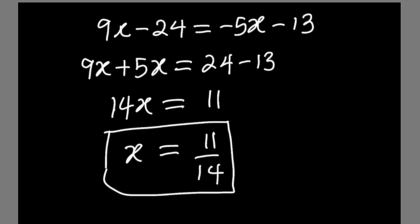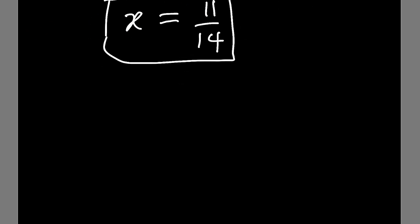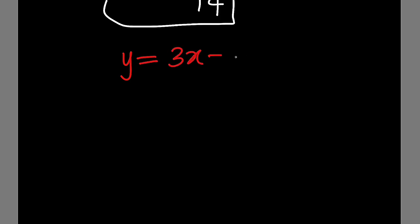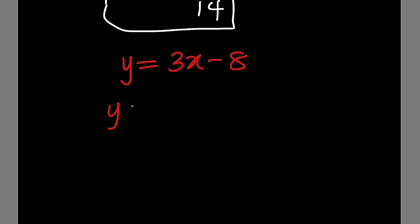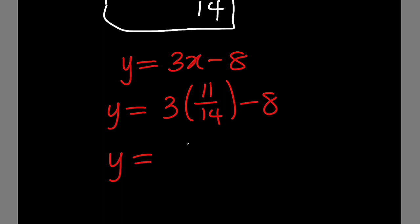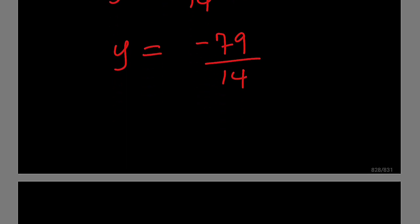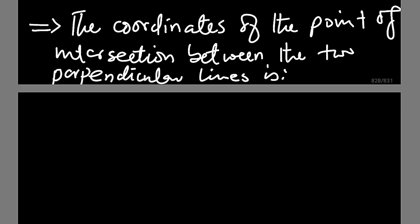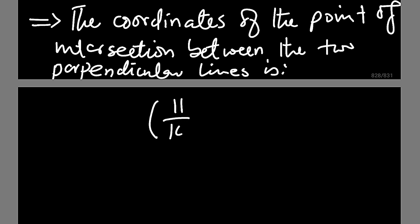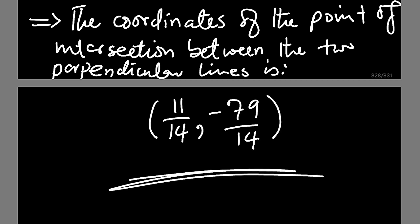This is the value of x at that point. For y, we use y equals 3x minus 8. Substituting x equals 11 over 14: y equals 3 multiplied by 11 over 14, minus 8, which is 33 over 14 minus 8, giving y equals negative 79 over 14. Hence, the point of intersection between the two perpendicular bisectors is (11 over 14, negative 79 over 14).